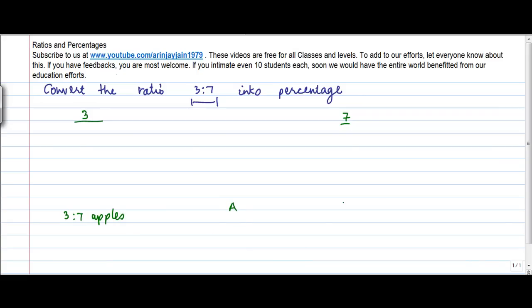Okay, let us say you had two people A and B. So A has 3 apples and B has 7 apples. So the ratio of their apples is 3 is to 7.